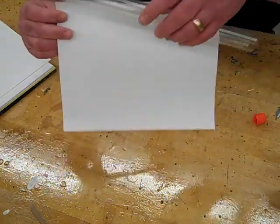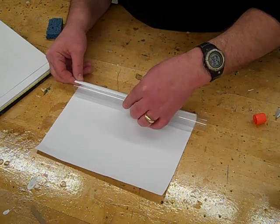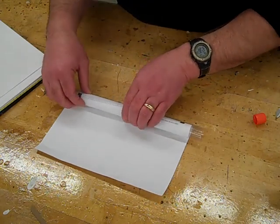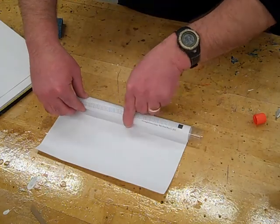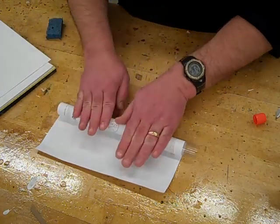And then when you get your tube, line up the bottom edge of the tube with the bottom of the paper. And you have to be careful here. You want to kind of tuck it under. And then once you get it going, then you just roll it.